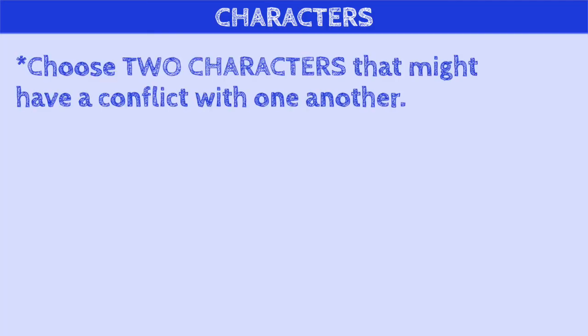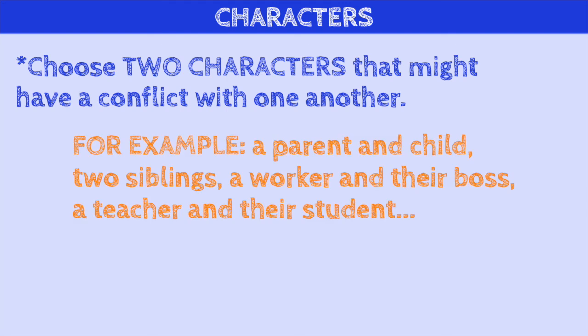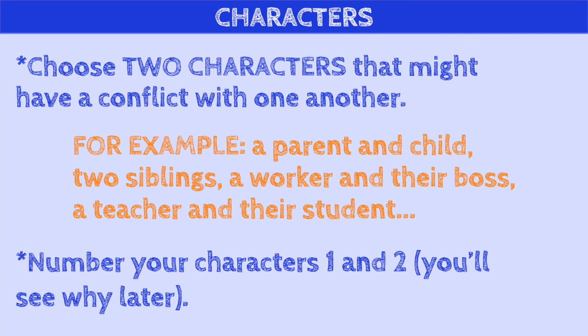So now that we know what a conflict is, let's write our own. Ready for step one? Here we go. Choose two characters that might have a conflict with one another, like T'Challa and Nakia do. For example: a parent and a child, two siblings, a worker and their boss, a teacher and their student — the list goes on and on. You can choose any two characters that you like. Number your characters one and two — you'll see why later.